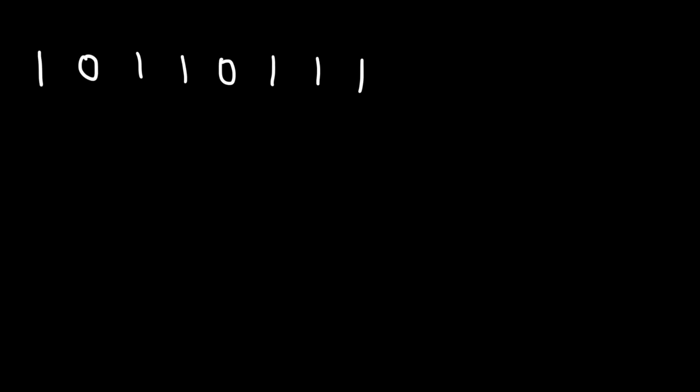The first thing you want to do is separate the binary numbers into groups of 4. So this is the first group of 4 and this is the second group of 4.